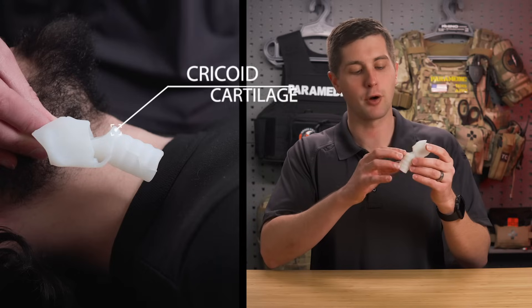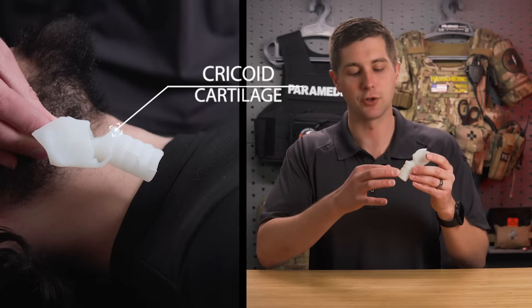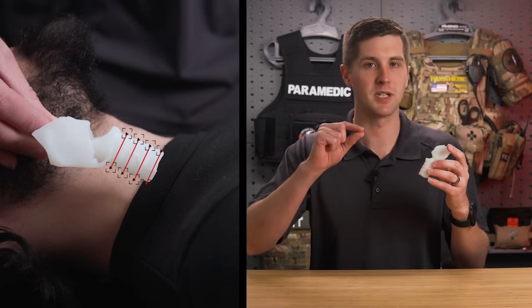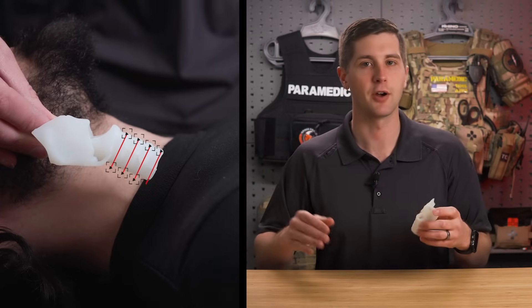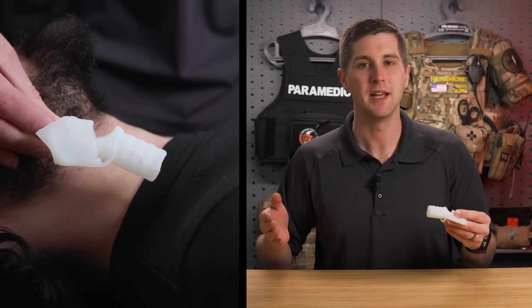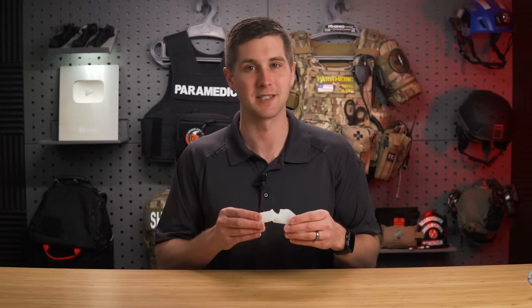Below that you have the cricoid cartilage and then you have your tracheal rings. These rings are going to be hard cartilage and then there is some tissue in between them, but it is very hard to insert the tube and can cause more trauma than necessary if that's where you end up accidentally cutting.